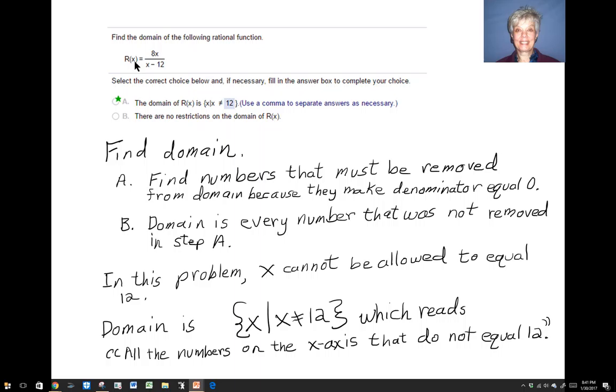...that is, not the domain, look at the denominator. For this x minus 12 to equal 0, x has got to equal 12. So 12 is the number we have to take out of the domain.